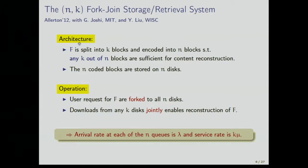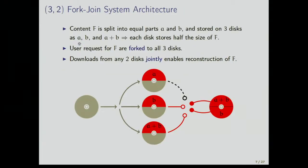We introduce an N-K fork-join system — not N-N — because not everything has to join at departure since we have coding. The file F is split into K blocks and encoded into N blocks so that any K out of N blocks are sufficient for content reconstruction. There are N encoded blocks stored on N different disks or servers. In operation, user requests are forked to all N disks, and downloads from any K jointly enable reconstruction of F.